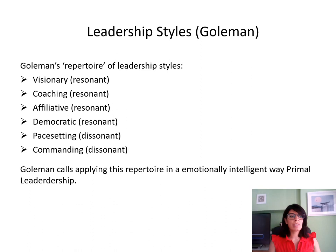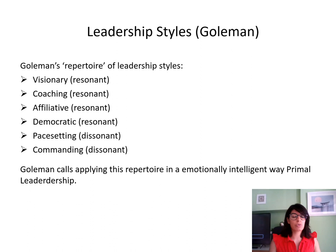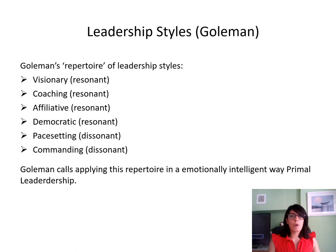Going back to Goldman's leadership styles — visionary, coaching, affiliative, democratic, pace setting and commanding — the idea is that an emotionally intelligent leader will be able to apply each of these in the environment they best fit. They will know when to be more commanding or when to coach, when to tell subordinates what to do or when to encourage them to find solutions themselves. When you're a leader, your skill set is actually more dynamic than it is one-direction focused.